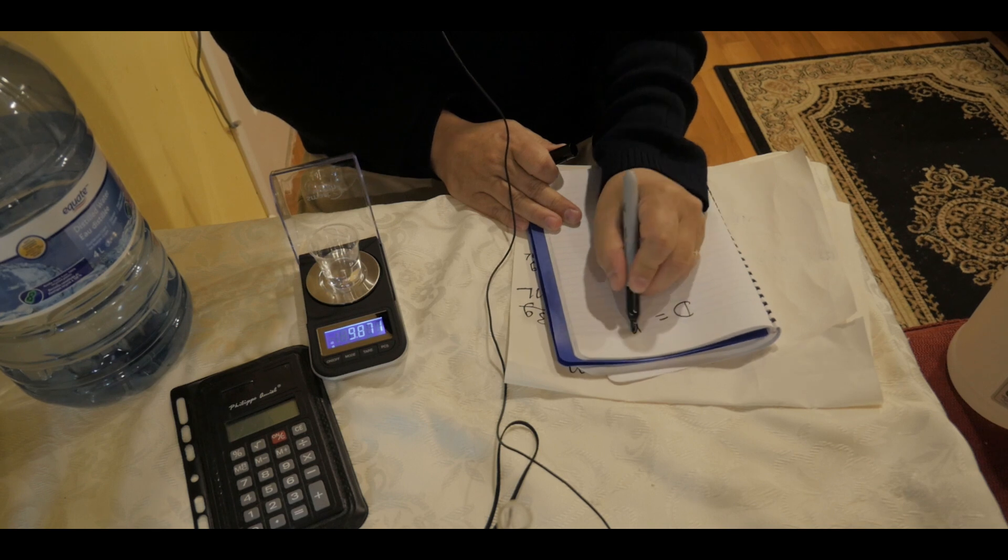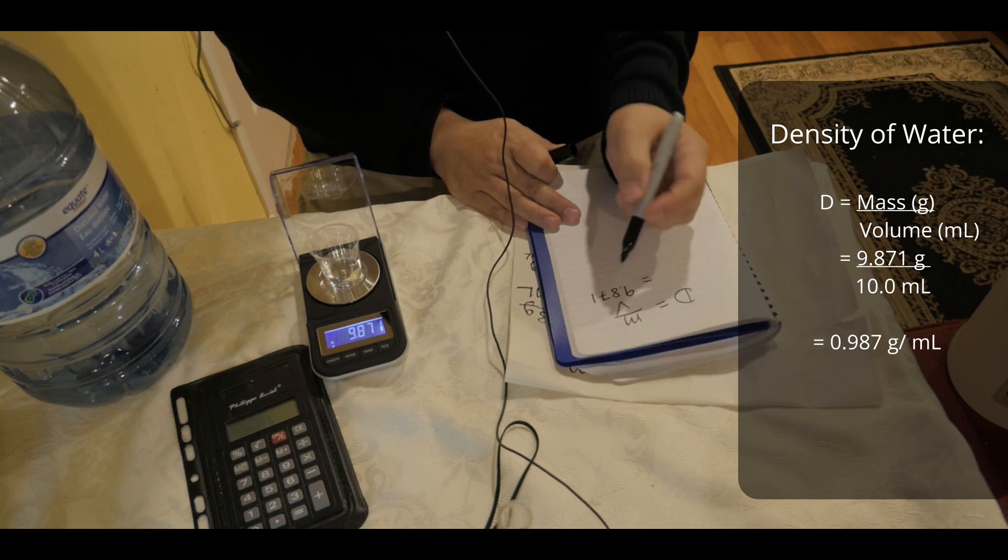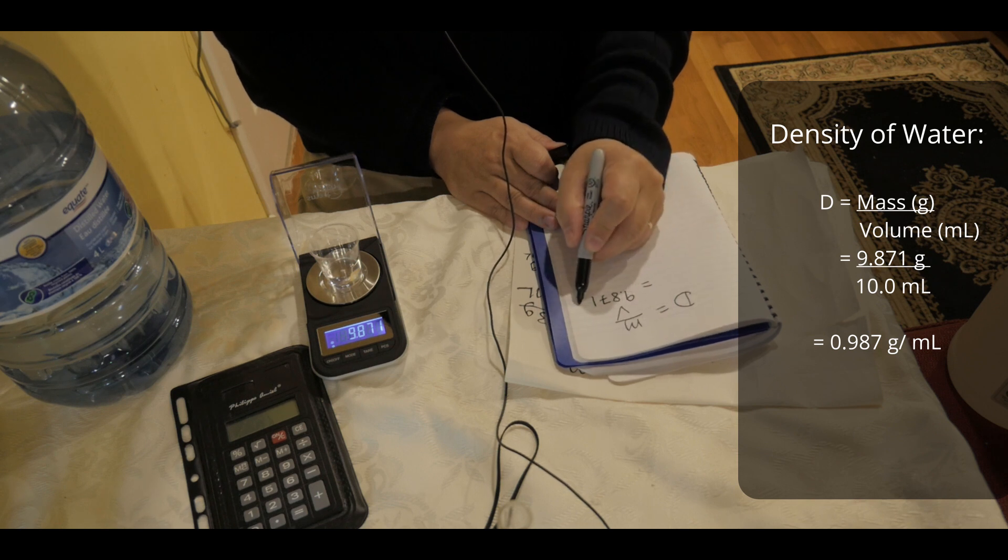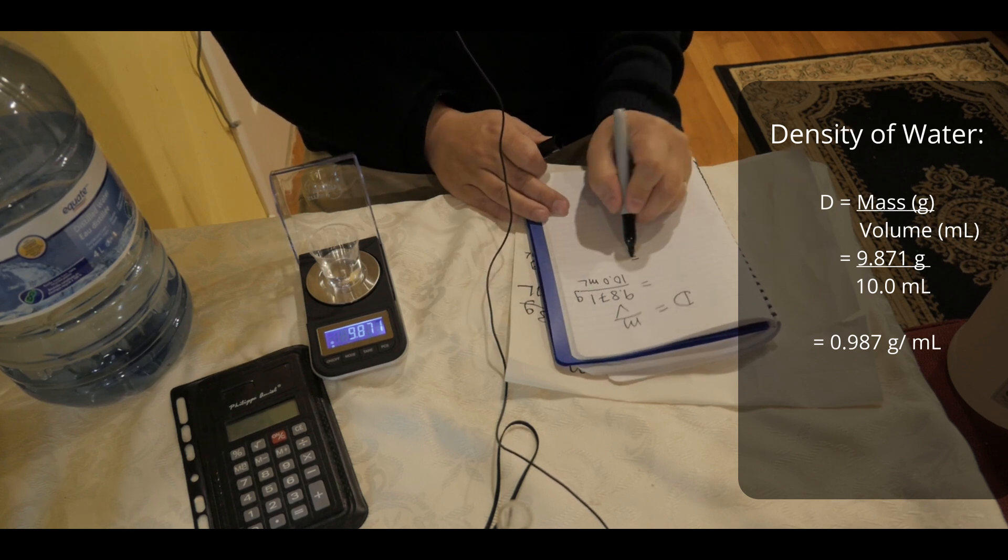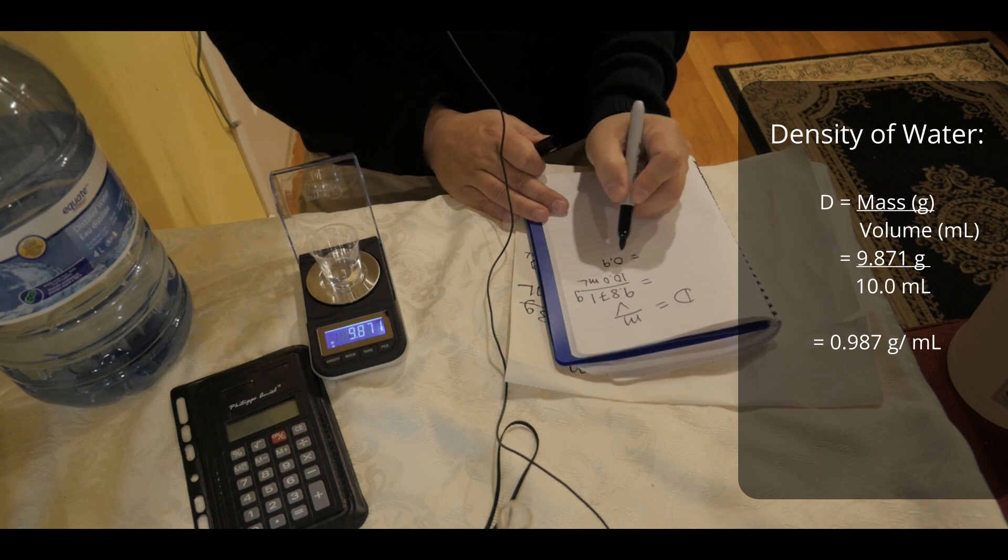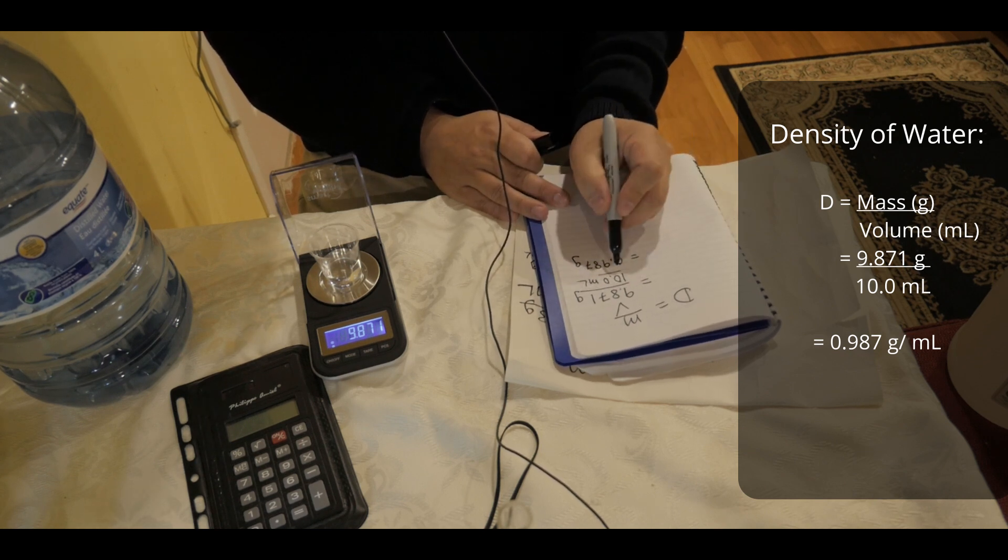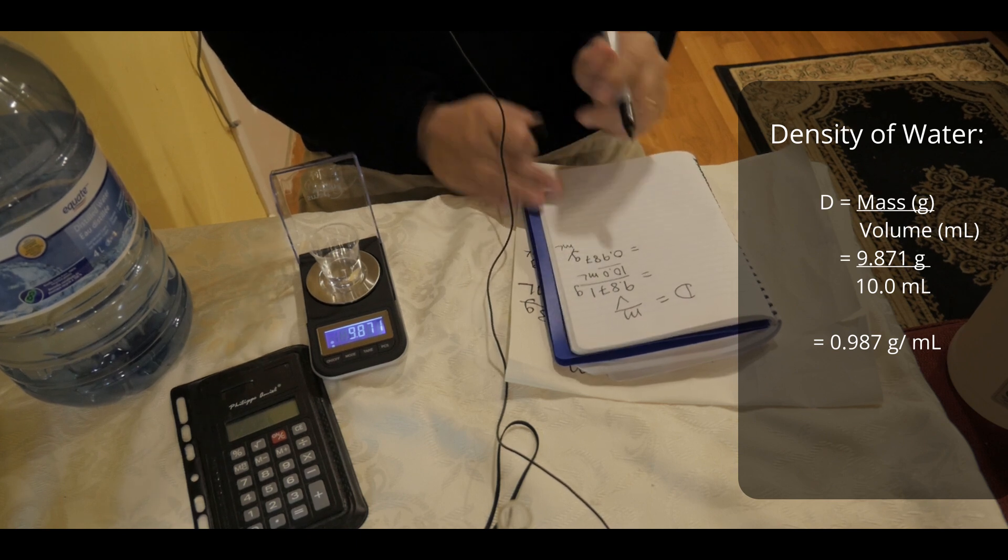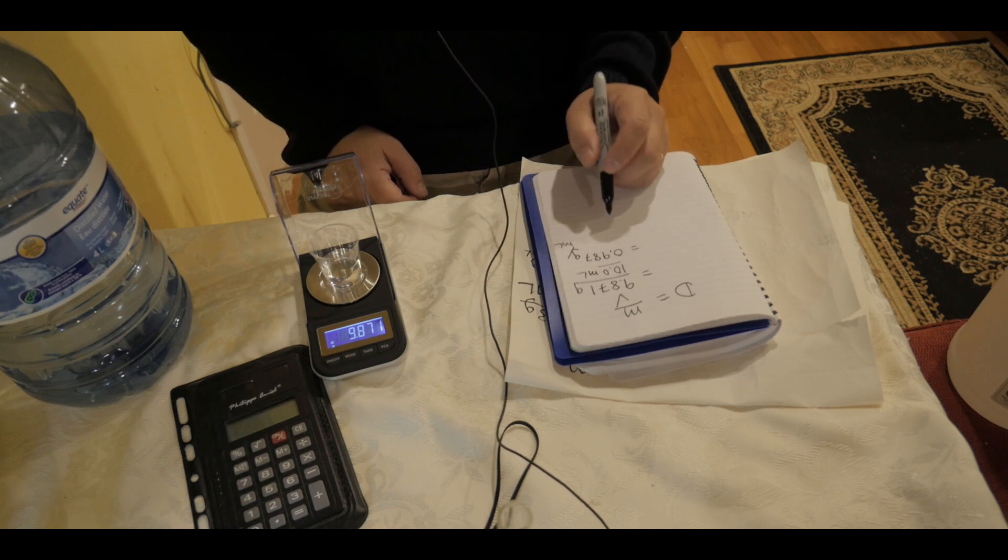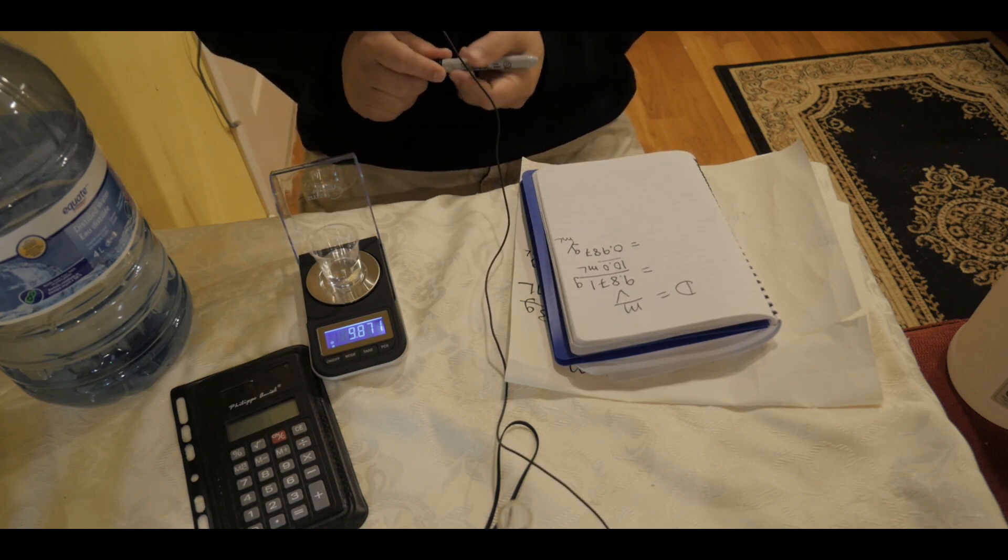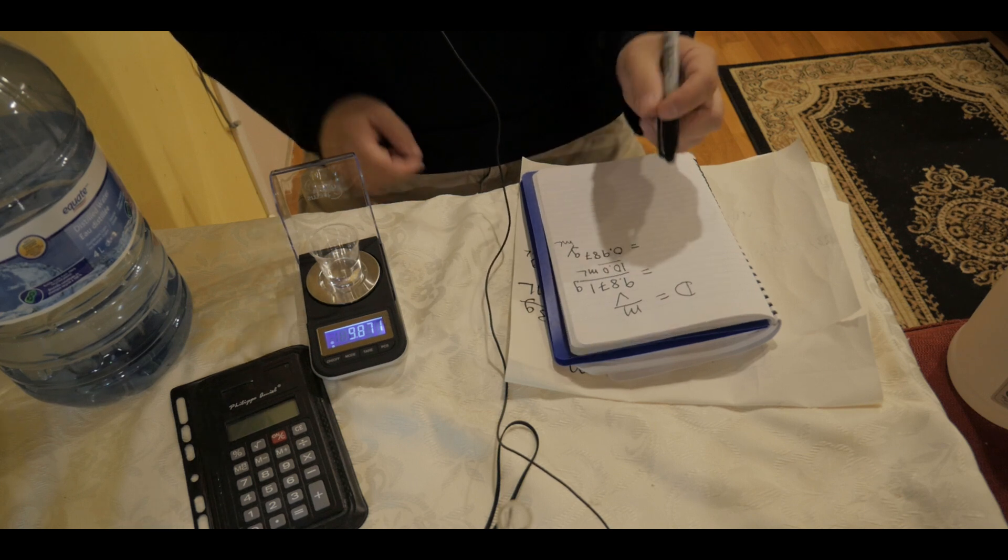We have the density being mass over volume. We know that the mass is 9.871, and now the last thousandth gram, I don't know if I can rely on that too much. But we'll just keep that for now. And then the volume was 10.0 milliliters. And so that would mean that the density is 0.987 grams per milliliter, because the measurement for the volume is only three significant figures. I mean, we know the density of water is 1.0. And this is a little bit off by 0.01 grams. So it's not bad. If I round this to two decimal places, 0.99 grams per milliliter, which is close to 1.0 grams per milliliter.